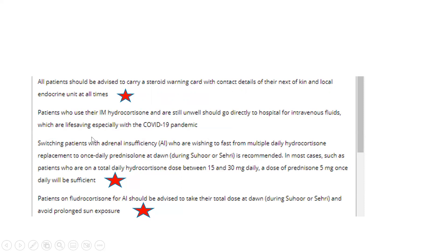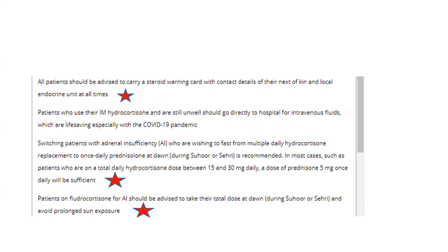For patients on multiple daily hydrocortisone replacement who wish to fast, it will be a good plan to switch them to once-daily prednisolone, taken during Suhoor — dawn time. For an ideal patient on hydrocortisone replacement of around 15 to 30 mg per day, a dose of 5 to 7.5 mg of prednisolone once a day in the morning should be sufficient. For fludrocortisone replacement, patients should be advised to take their total dose at dawn during Suhoor and avoid prolonged sun exposure during the day.